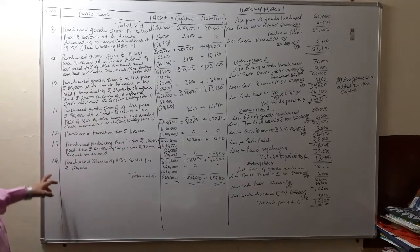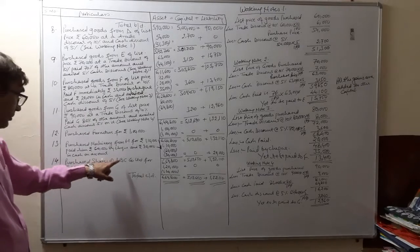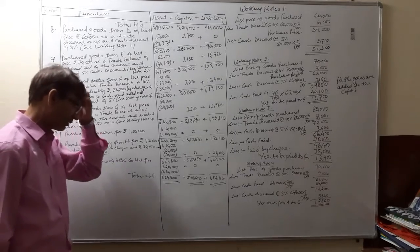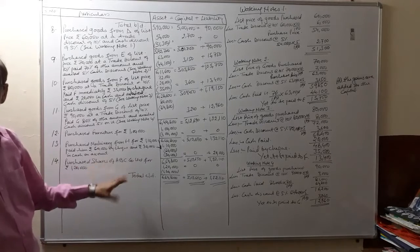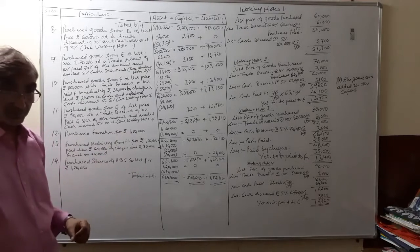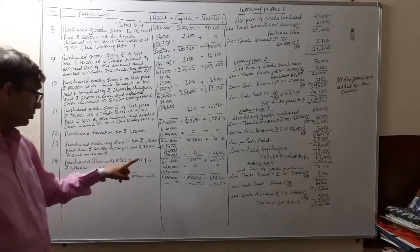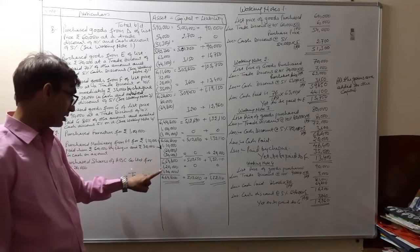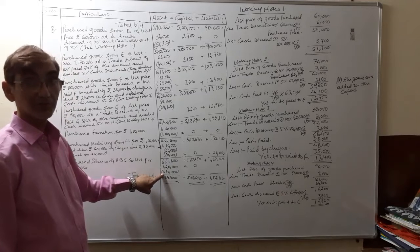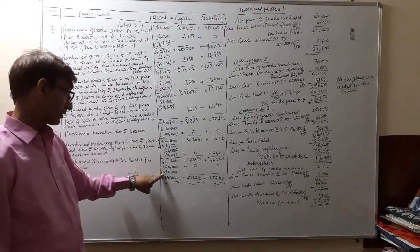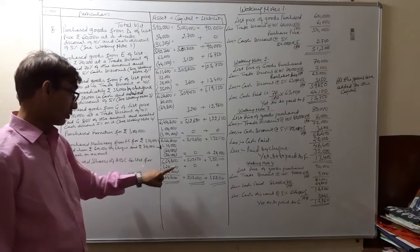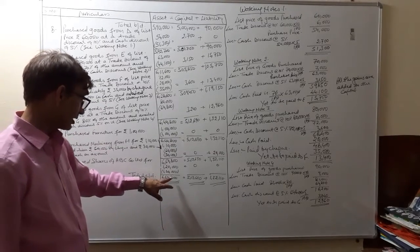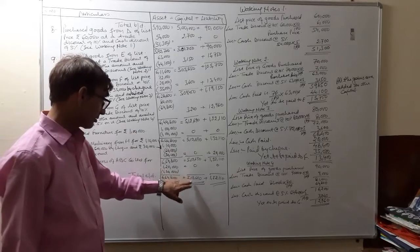Transaction 14: Purchase shares of ABC Company Limited for rupees 1,20,000. This is the case of investment — whenever we purchase securities they are our investments. Investments are also assets, so our assets increase by 1 lakh 20,000. On the other hand, we paid the money, so 1 lakh 20,000 is subtracted from assets. No effect on capital, no effect on liability.